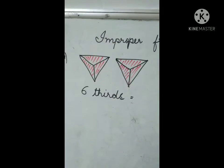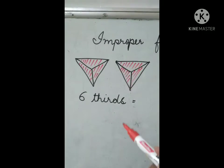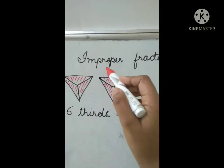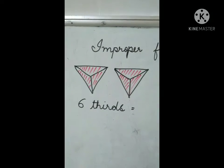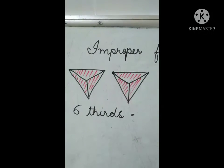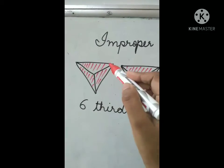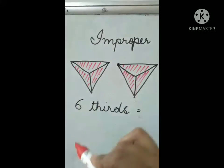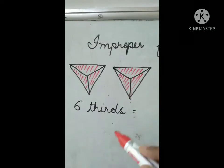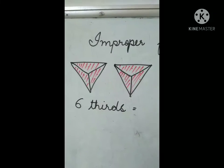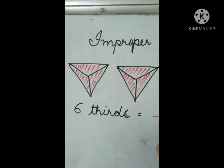In this question, you have to represent this figure in the form of improper fraction. Now, let's see in how many parts a figure is divided into. This figure is divided into 1, 2, 3 equal parts. Even this figure is divided into 3 equal parts. So that 3 will be written as the denominator.